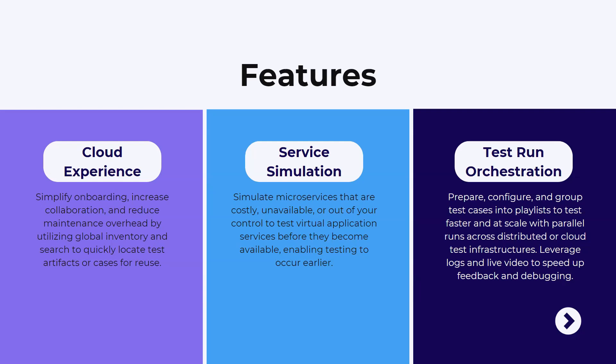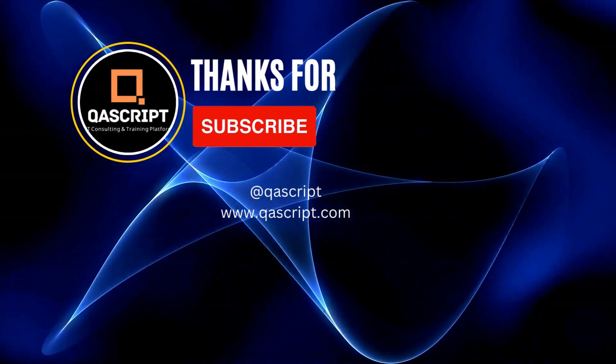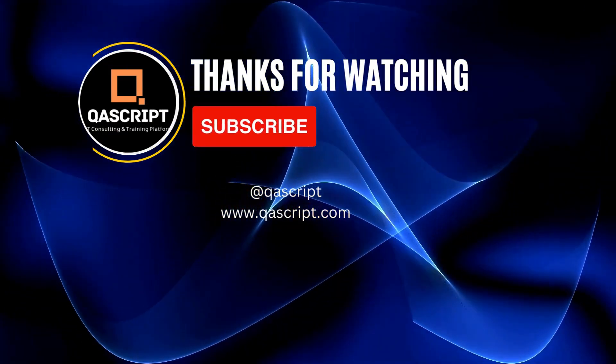We'll go through all these features in the upcoming videos, including live examples of testing APIs and web applications, similar to what was done in Tricentis Tosca. In the next video, we'll see how to set up Tricentis Test Automation, how to register for the tool, and how to get started. If you have any questions, leave them in the comments, and if you like this video, please subscribe to the channel.